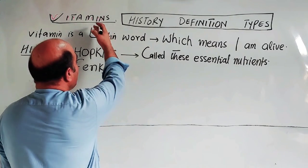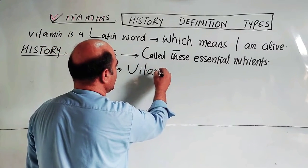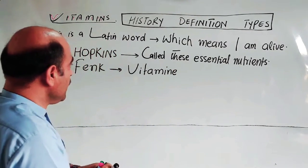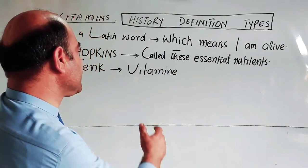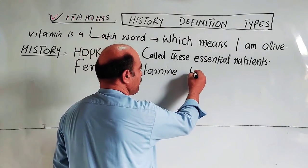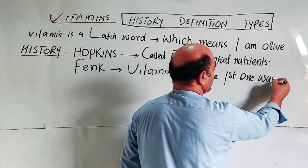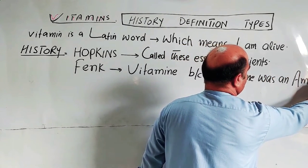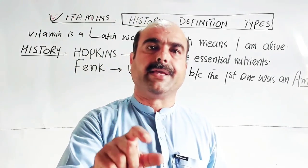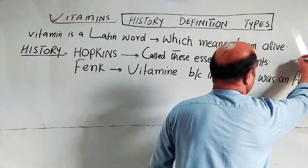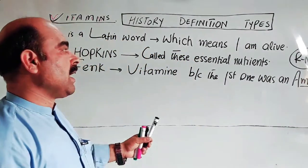The name vitamin comes from the word 'vital amine' because the first vitamin discovered was an amine. An amine is a compound containing an NH2 functional group, and the general formula for amines is RNH2. So the original term was 'vital amine'.